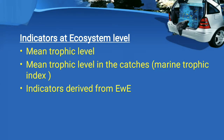Indicators at the ecosystem level include mean trophic level or mean trophic level in the catches, and the marine trophic index, which estimates the trophic model. Indicators derived from Ecopath with Ecosim (EWE) include connectance, omnivory, primary production required, ascendency, and the Fishing-In-Balance (FIB) index.